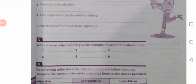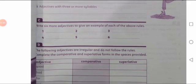You can write those examples here. Come to Part C: write six more adjectives to give an example of each of the above rules. I have told you the examples, so you can find more and do this part yourself.